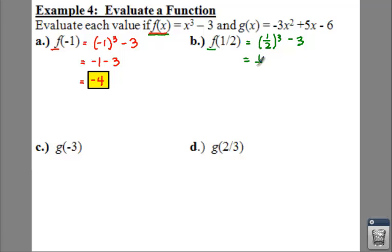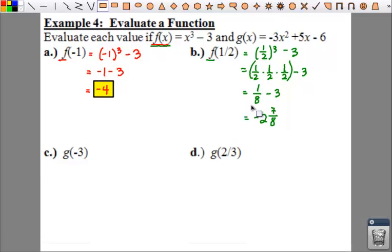So, if you have 1/2 to the third power, that means you have 1/2 times 1/2 times 1/2 minus 3. So, if we multiply our 1/2s together, that's going to give us 1/8 minus 3, which, when we take those and subtract them, gives us -2 and 7/8. Love me some fractions.